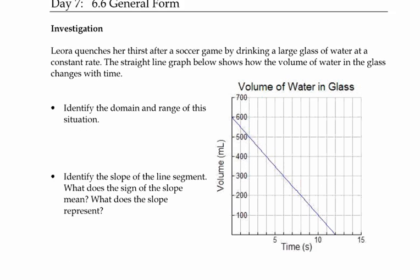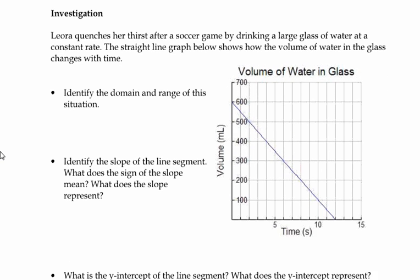General form, and we've looked at general form, so let's start with an investigation or a word problem. Here, Lyra quenches her thirst after a soccer game by drinking a large glass of water at a constant rate. The straight line graph shows how the volume of water in the glass changes with time.